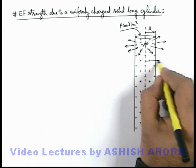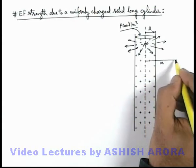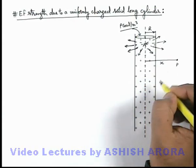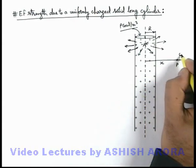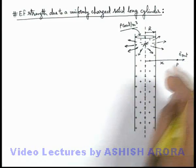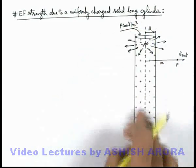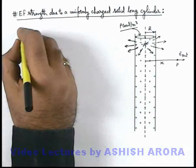If we wish to calculate the electric field at a distance x outside the cylinder at a point P, electric field outside can be directly given by the result of uniformly charged long thread. So we can write in outside region: